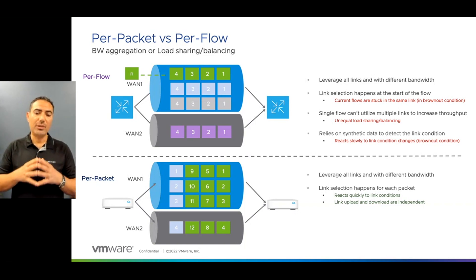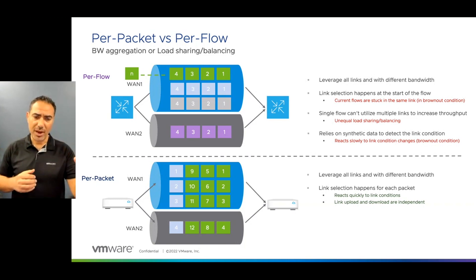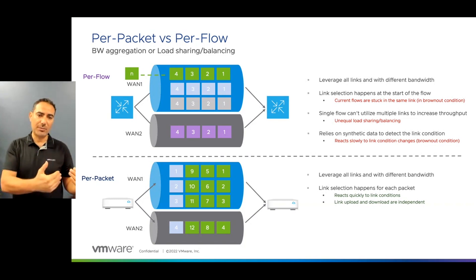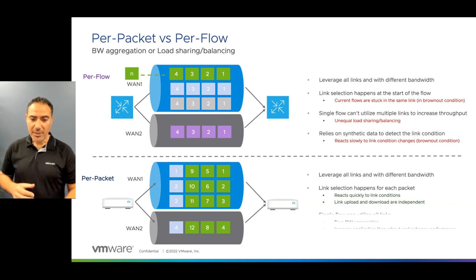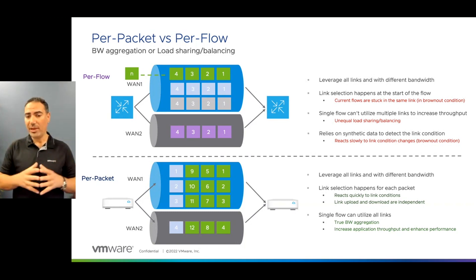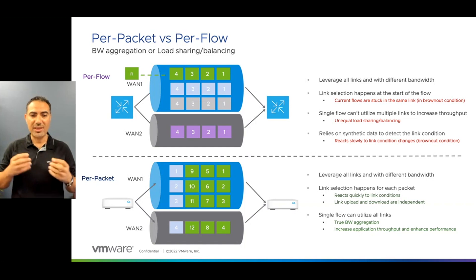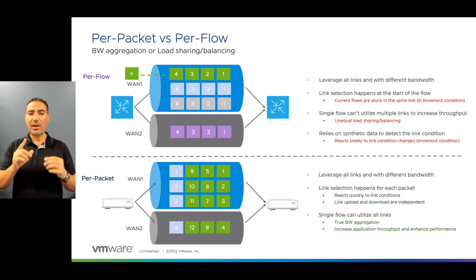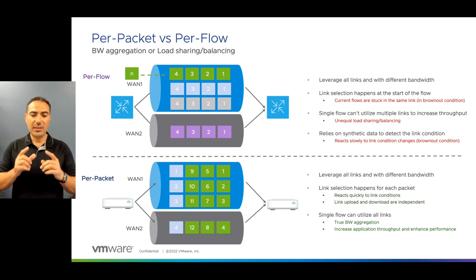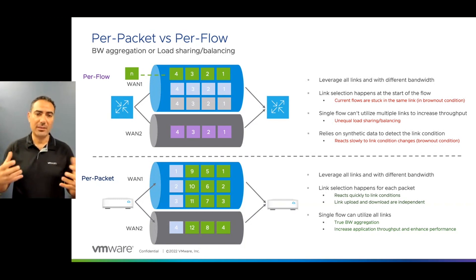The link upload and download are also independent in per-packet, and there are many use cases for that — for instance, when one user is uploading files while another is downloading. Per-packet treats upload and download circuits independently. Finally, a single flow can truly utilize all available transports, which improves application performance and gives true bandwidth aggregation — something that is not possible with per-flow. One flow can leverage all transport circuits and the application sees the combined bandwidth of all circuits together. This is the only way to increase application throughput and enhance performance.